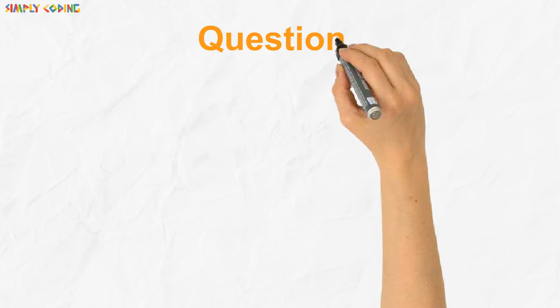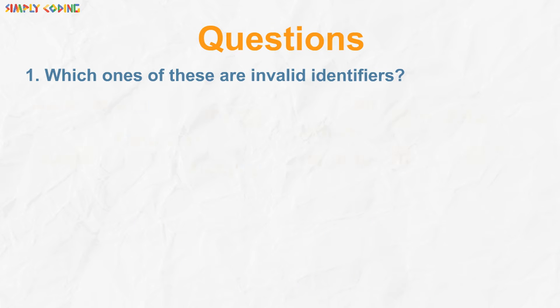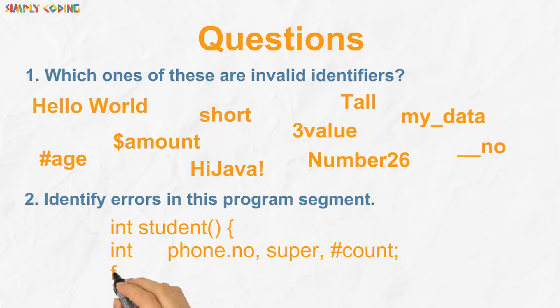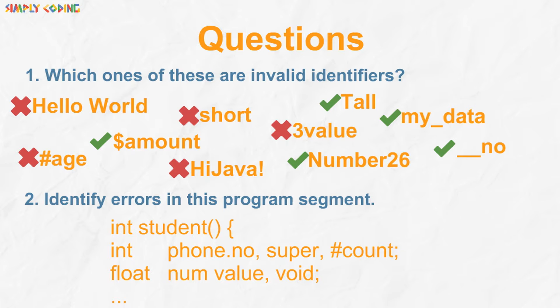Let's look at some questions that can be asked on this. One of the questions that can be asked is to identify valid, invalid identifier. Or you might be given a program and asked to identify errors in it and correct it. Let's answer this. Here hello world is invalid as it uses a space. Hi java is invalid as it uses a punctuation mark. Short is a keyword. Three value begins with a number. Hash age is also invalid as identifier name can only start with underscore or dollar symbol. Remaining all follow the java guidelines so are valid identifiers.